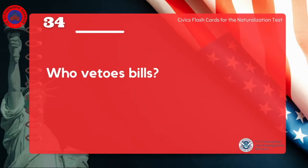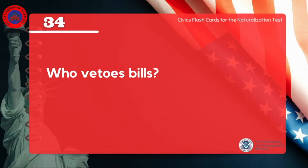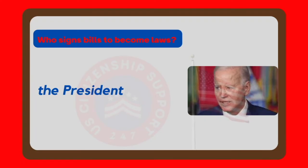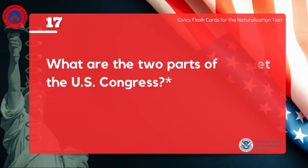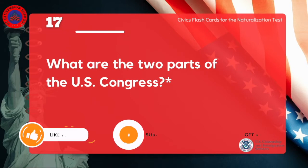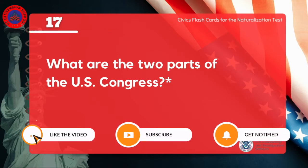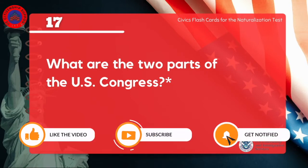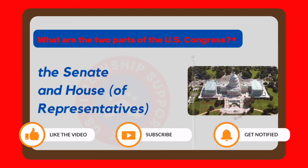Who vetoes bills? The president. What are the two parts of the U.S. Congress? The Senate and House of Representatives.